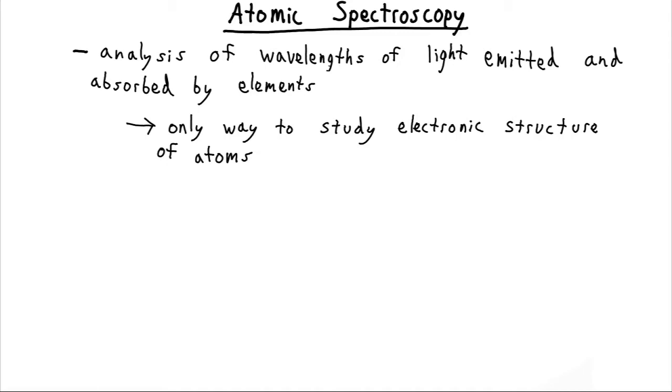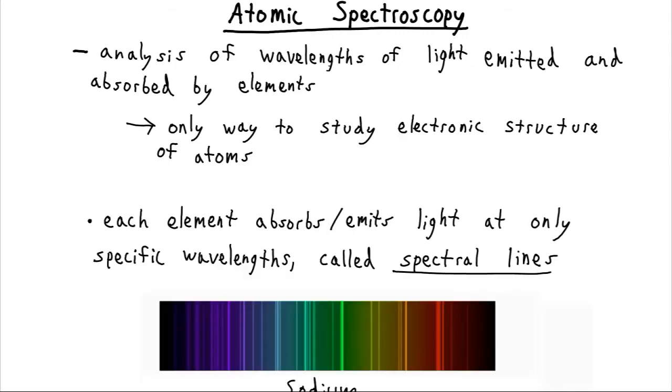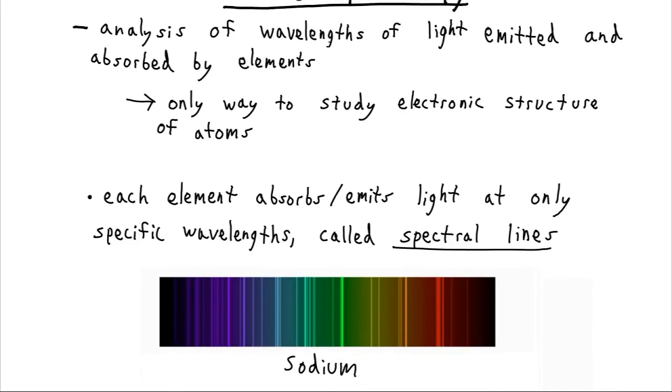There's no microscopes which are sufficient for probing them, but we can radiate them with light and see what we get back as a result. So each element is going to absorb or emit light only at specific wavelengths. These are called spectral lines.